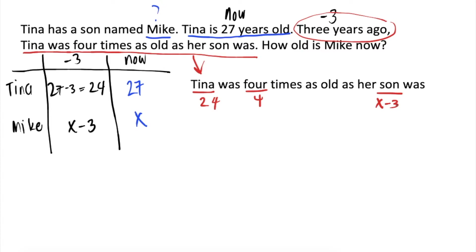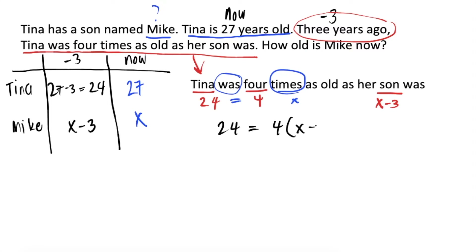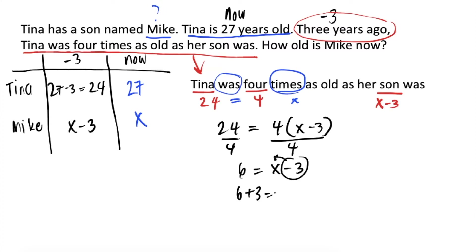Okay, this time, ano naman yung operations involved? When we say Tina was 4 times as old as her son — another way para sabihin ito is, Tina's age is equal to 4 times as old as her son was. Times meaning, we will multiply — 4 and x minus 3. So, writing it in equation form, 24 is equal to 4 times x minus 3. So, divide both sides by 4, we will get 6 is equal to x minus 3. Dipad natin yung negative 3 on the other side, we will get 6 plus 3 is equal to x. Simplifying, 9 is equal to x. So, since x is Mike's age now, our final answer is 9.